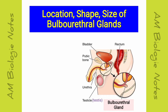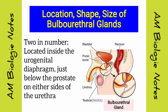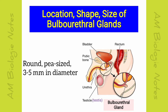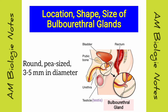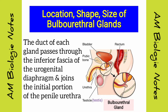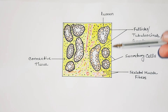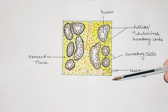Bulbo-urethral or Cowper's glands: two bulbo-urethral or Cowper's glands are located inside the urogenital diaphragm, just below the prostate on either side of the urethra. The glands are round, pea-sized structures, 3 to 5 mm in diameter. The duct of each gland passes through the inferior fascia of the urogenital diaphragm and joins the initial portion of the penile urethra.